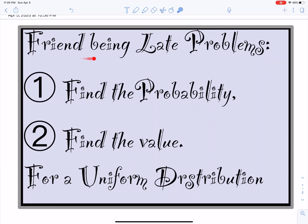Alright, so I want to talk about a friend being late problem. There's two problems: number one, finding the probability; number two, finding the value. And we're going to be dealing with a uniform distribution here.